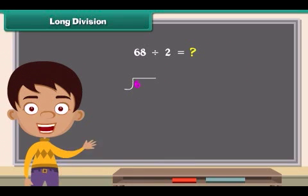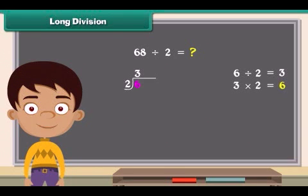First we will divide 6 by 2. 6 divided by 2 is 3. So we put that 3 right above the 6. Now multiply the 3 and 2 and put the answer right under the 6.